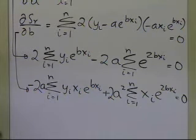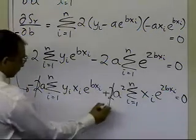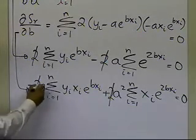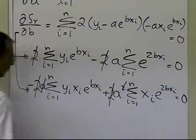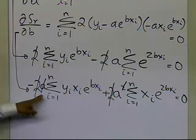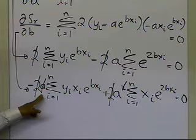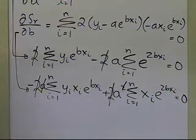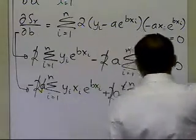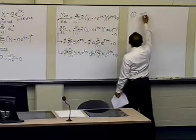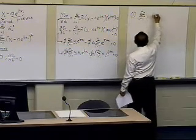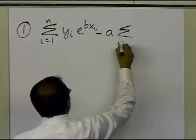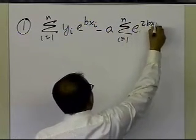I can divide both sides by 2, and I can also divide by `a` — which is valid because if a equals 0 then y equals 0 as my regression curve, so a must be nonzero. After simplifying, the first equation becomes: summation i=1 to n of y_i·e^(b·x_i) minus a·summation i=1 to n of e^(2b·x_i) equals 0.